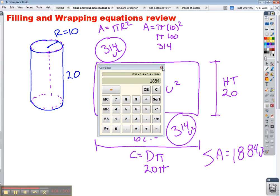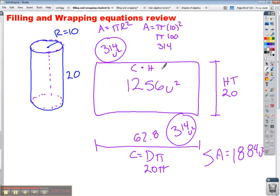There is also an equation for those who prefer equations. The surface area of a cylinder equals 2 times pi r squared—that represents the top and the bottom—plus circumference, which is diameter pi times the height. That represents this rectangle. So this equation could also be used.